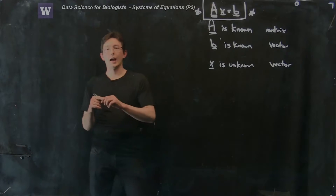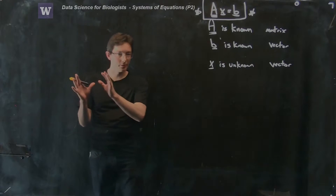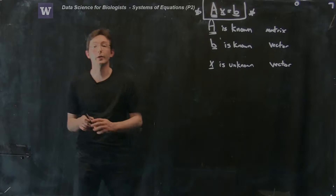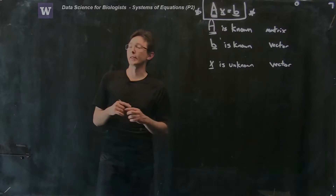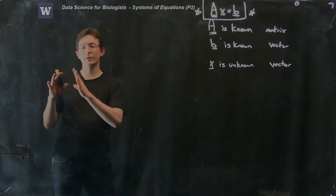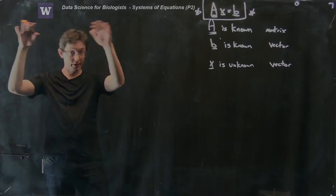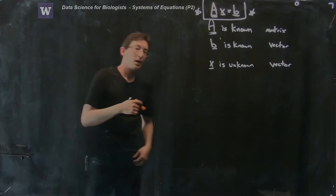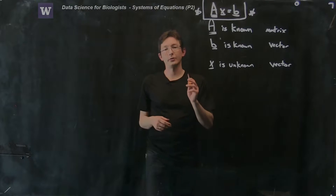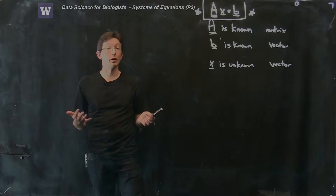We just looked at how you can solve a simple two-by-two system of equations with two unknown variables, and now we're going to do a couple of things. We're going to generalize this to a three-by-three system with three equations and three unknowns, and we're also going to figure out how to save our work.